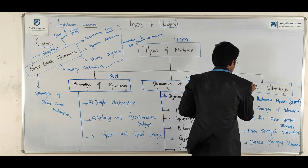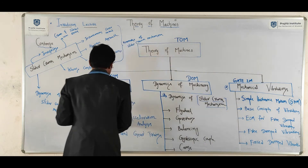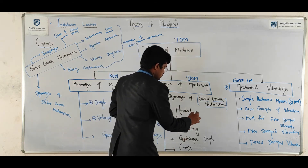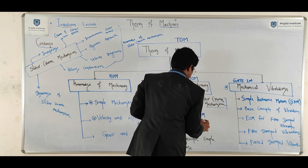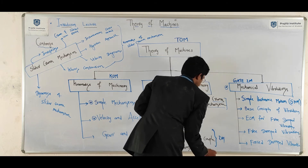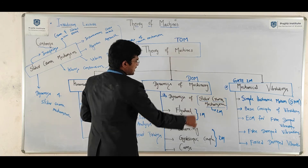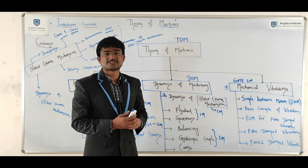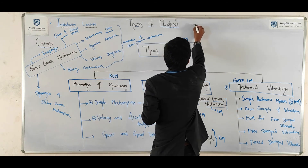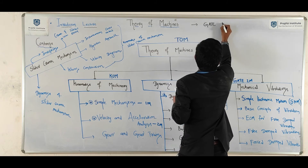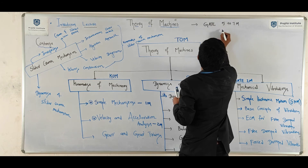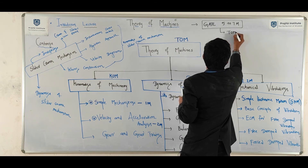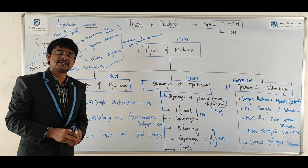From an examination point of view: vibrations carry two marks in GATE — confirmed. Simple mechanisms carry one mark. Velocity and acceleration analysis carries two marks. Balancing carries around two marks. Gears or dynamics of slider crank mechanism together give about two marks. Nowadays, Theory of Machines gets around five to seven marks in GATE total — minimum seven marks is expected.